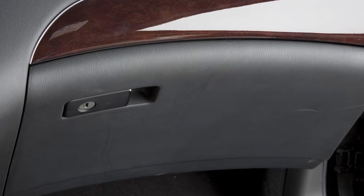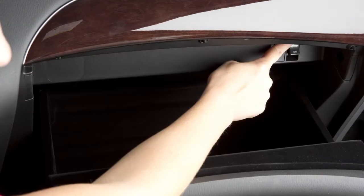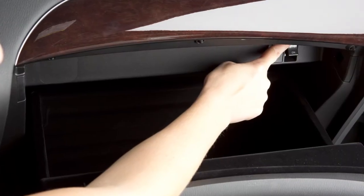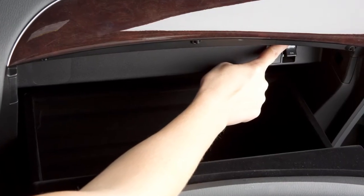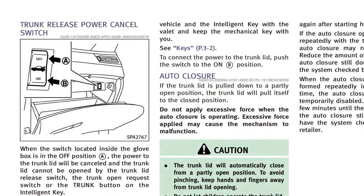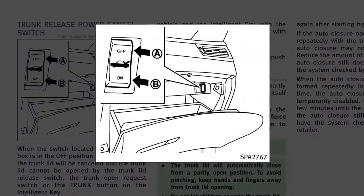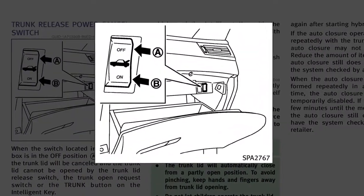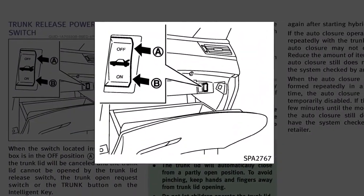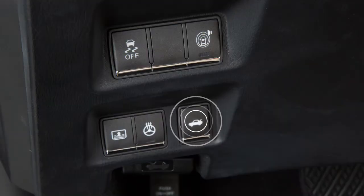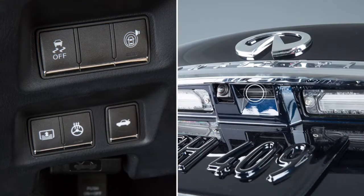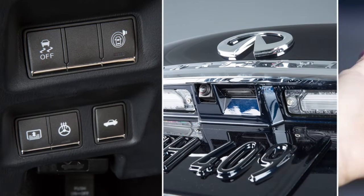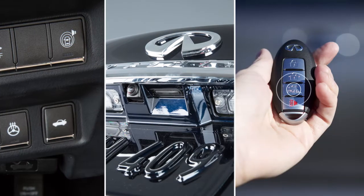Located inside the glove box is the trunk release power cancel switch. When this switch is in the off position, power to the trunk lid is canceled and the trunk lid cannot be opened by the trunk lid release switch, the trunk open request switch, or the trunk button on the Intelligent Key.